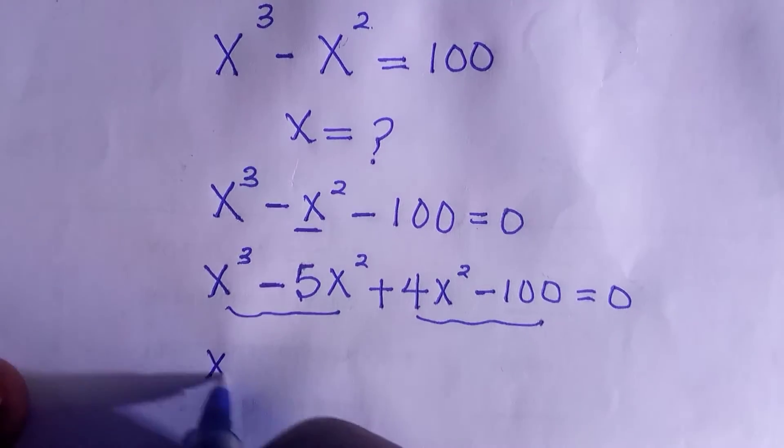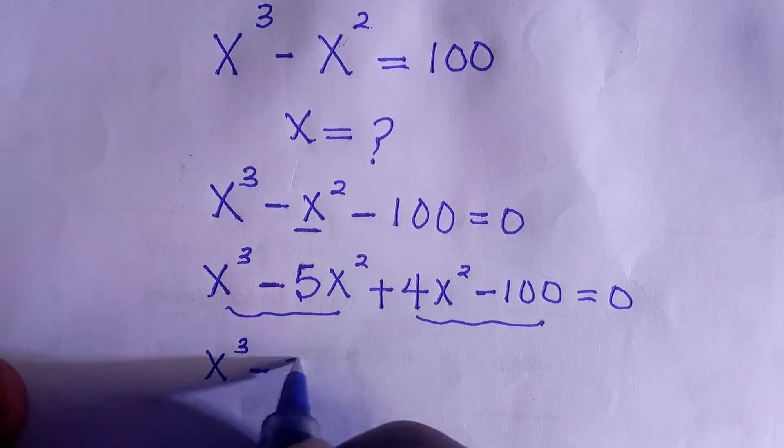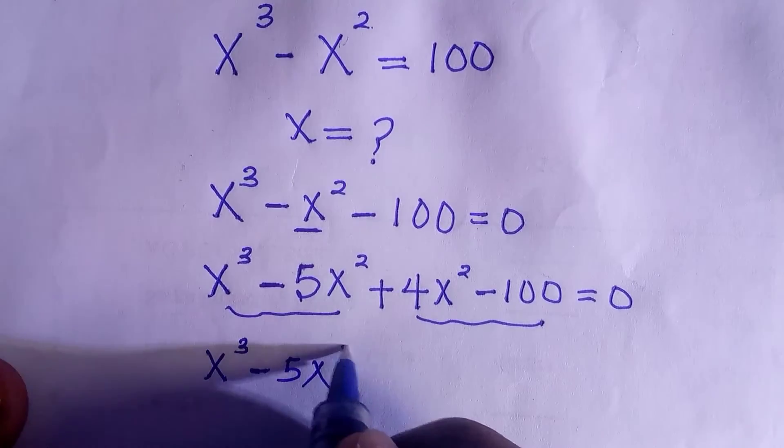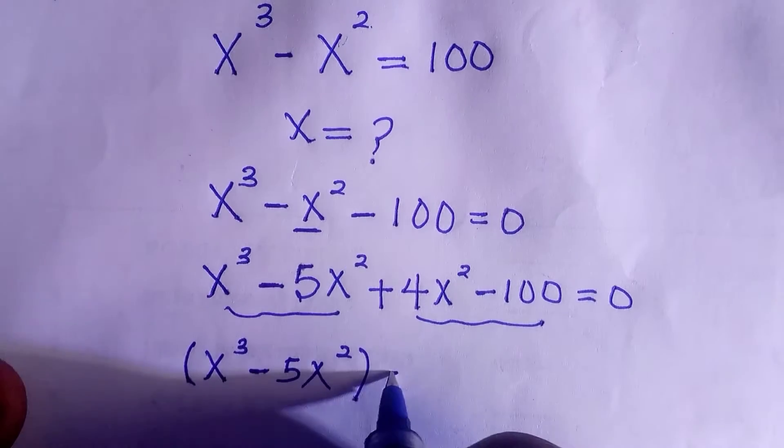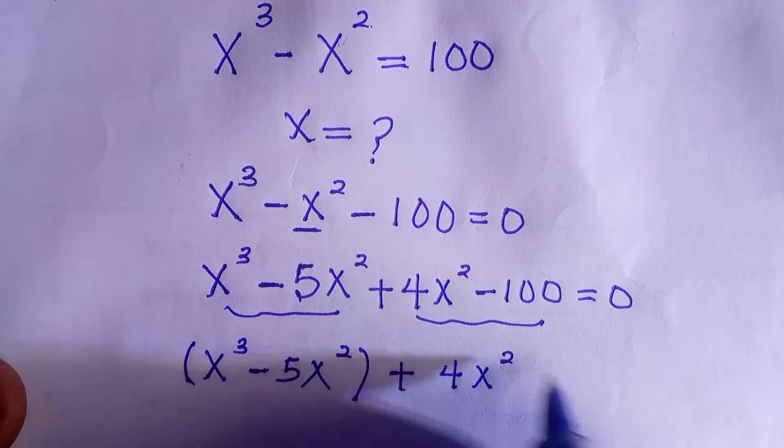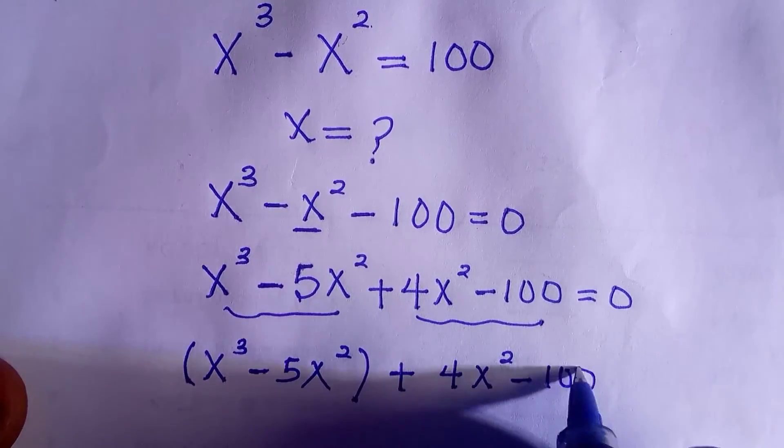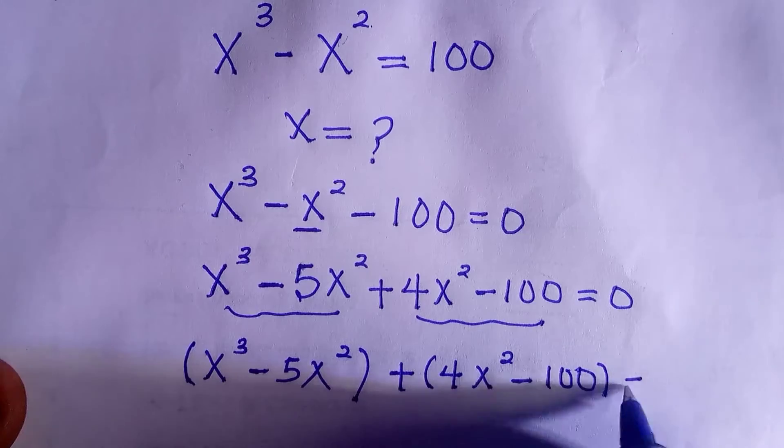We have x to the power of 3 minus 5x to the power of 2, we bracket this, and we also bracket 4x raised to power of 2 minus 100, everything equals to 0.